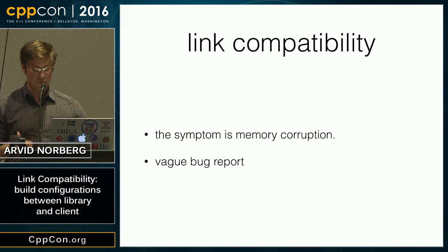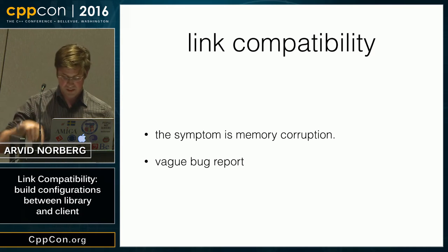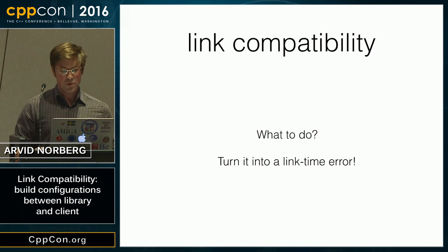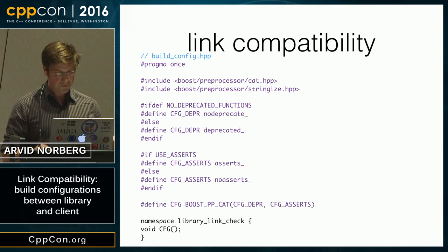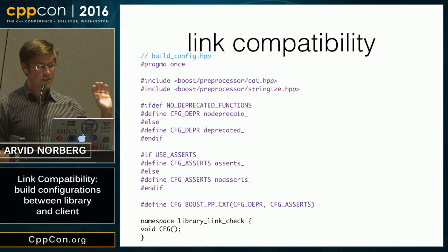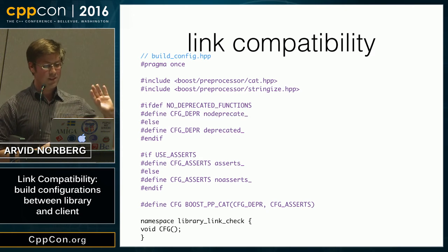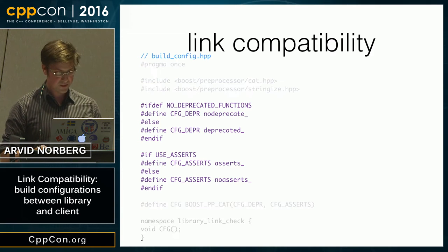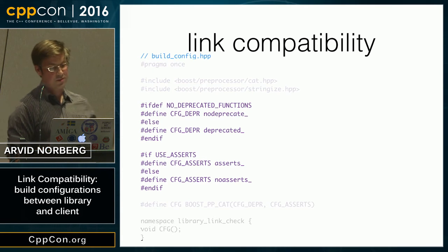So what do you do? You can turn it into a link time error. What I ended up doing is something like this. As part of your library, you have one header that's the build config header.